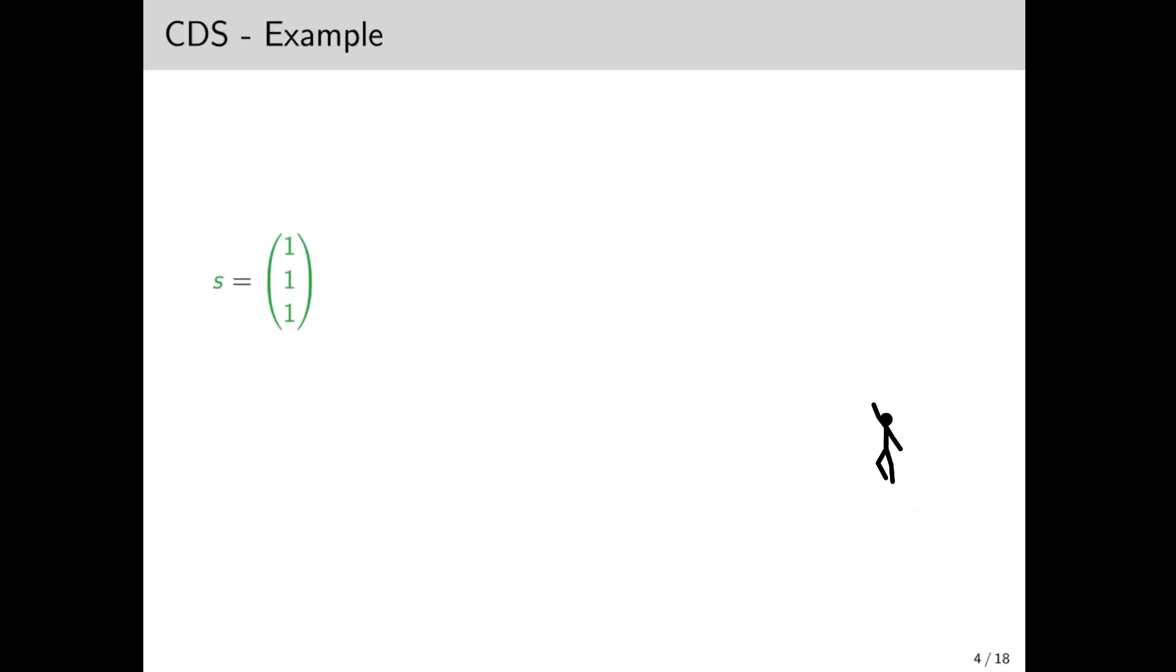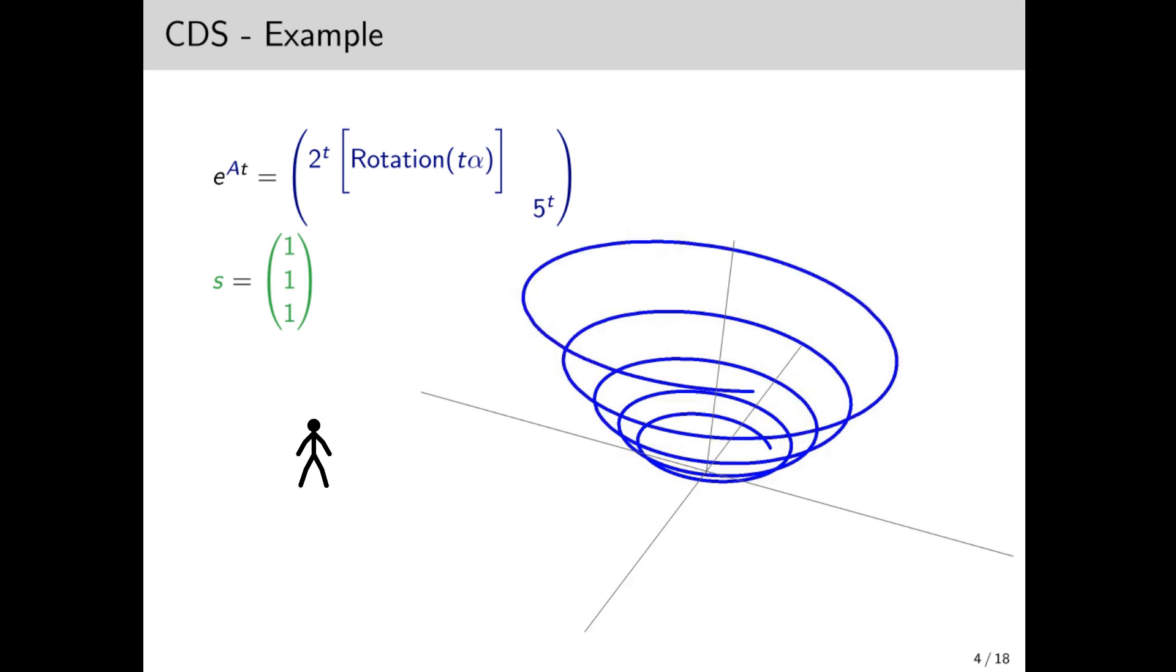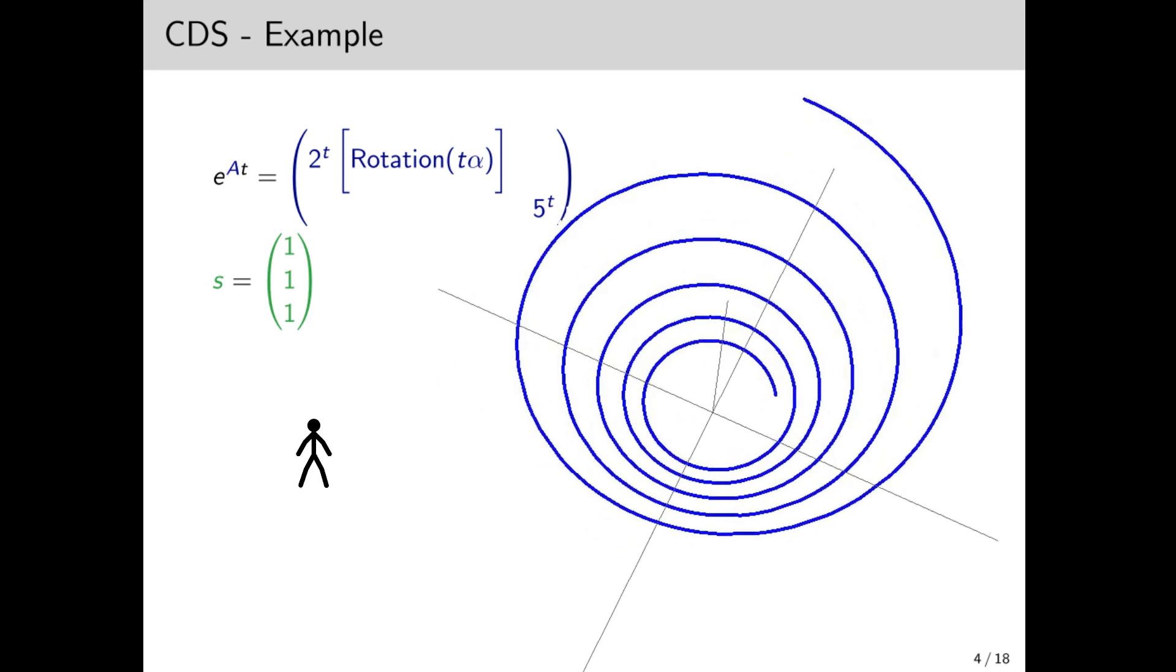Let's see an example of a CDS. Suppose we start with the initial vector s, this point right here, and let's take some matrix A. Now, in order to understand the behavior of the system, we have to figure out what e^(At)s looks like. So At looks like this. We just multiply everything by t. We then take the exponential of A, which turns out to look like this. Again, don't worry too much about that. This is actually true for the entire talk. There is never any need to worry. Anyway, this matrix can actually be thought of simply as a rotation by tα, and a stretch by 2^t on the xy plane, and a stretch by 5^t on the z axis. So as the system evolves, it spirals out and climbs up.